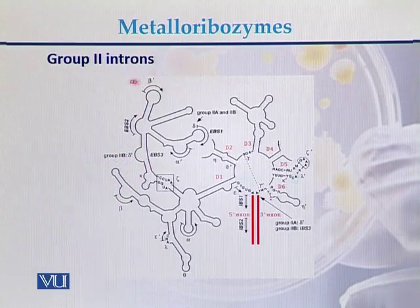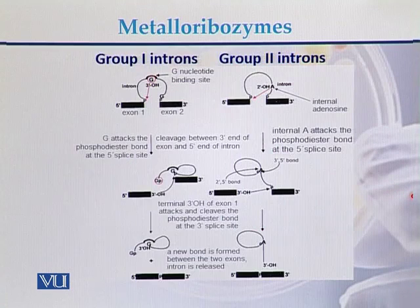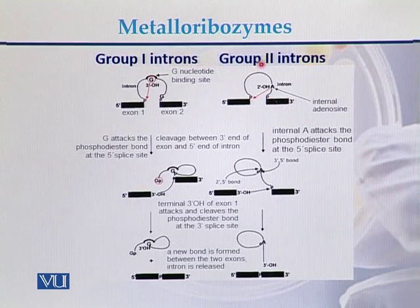This is the typical diagram of group 2 introns. What is the difference between group 1 introns and group 2 introns?